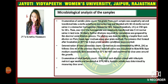Microbial analysis — Enumeration of the aerobic plate count: 10 grams from each sample was aseptically cut and transferred into a sterile polyethylene stomacher bag and blended with 90 ml sterile normal saline in a stomacher homogenizer at 230 rpm for 60 seconds. Then 1 ml of the homogenate was aseptically transferred to 9 ml normal saline in a test tube. Further dilutions required for inoculation were prepared by the decimal serial dilution process. Plating was done by adding a loopful from each dilution onto plate count agar medium using the pour plate method, and colonies formed after incubation at 35°C for 2 days under aerobic conditions were counted.